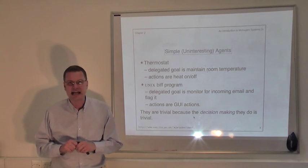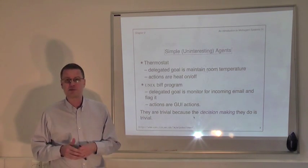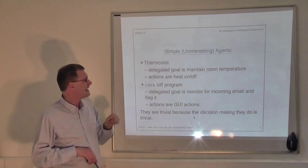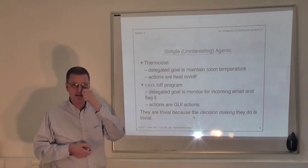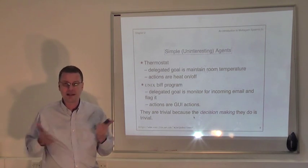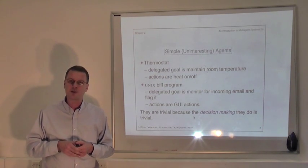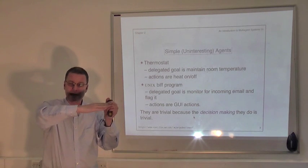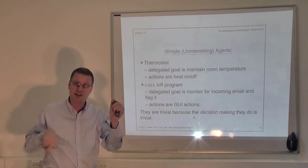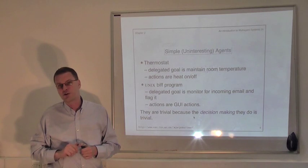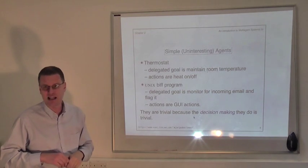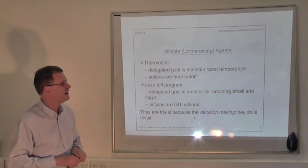We don't think of these as agents because their decision-making is too simple. They satisfy our basic definition—they have a delegated goal and decide how to achieve it—but trivially. In older thermostats, decision-making was encoded in a bimetallic strip that bent when heated, opening a circuit, and bent back when cooled, closing it to switch heating on or off. Because this decision-making is so trivial, we don't usually think of them as agents.